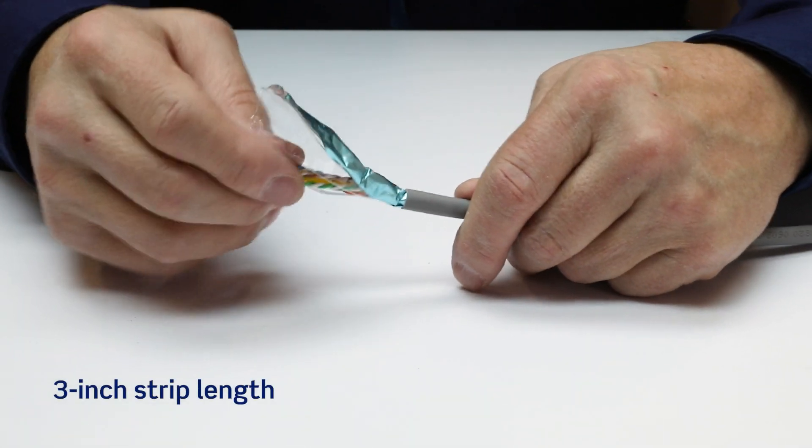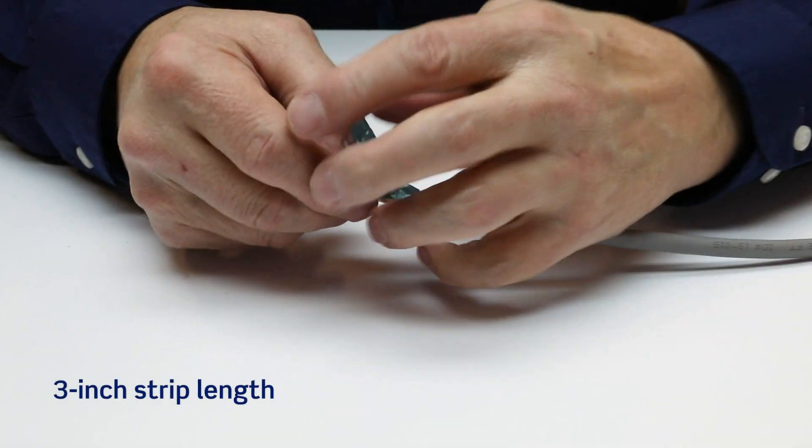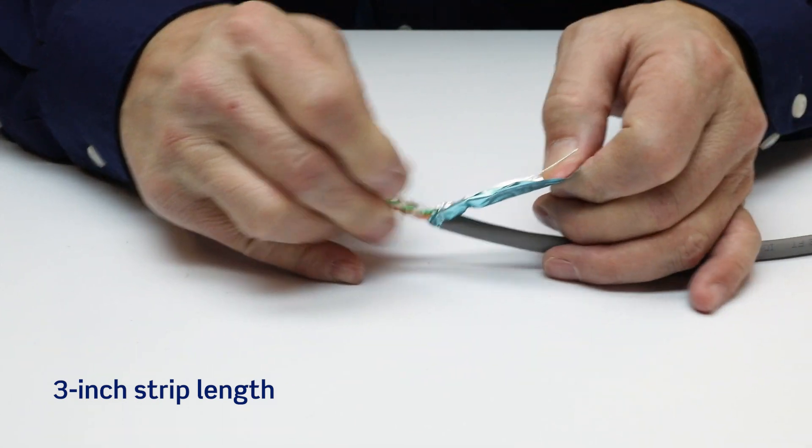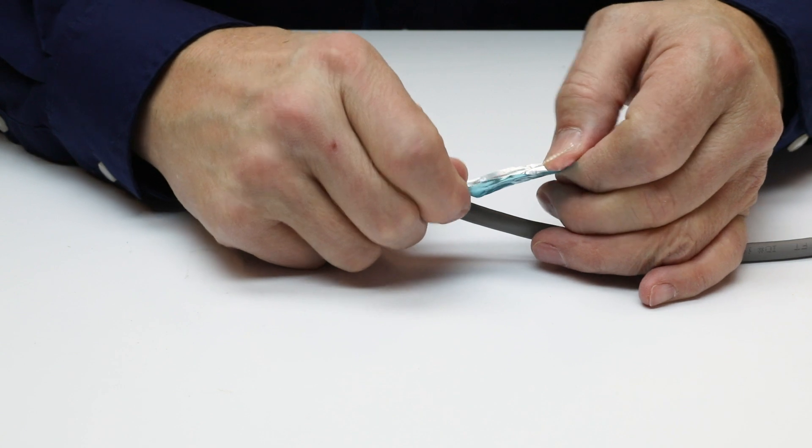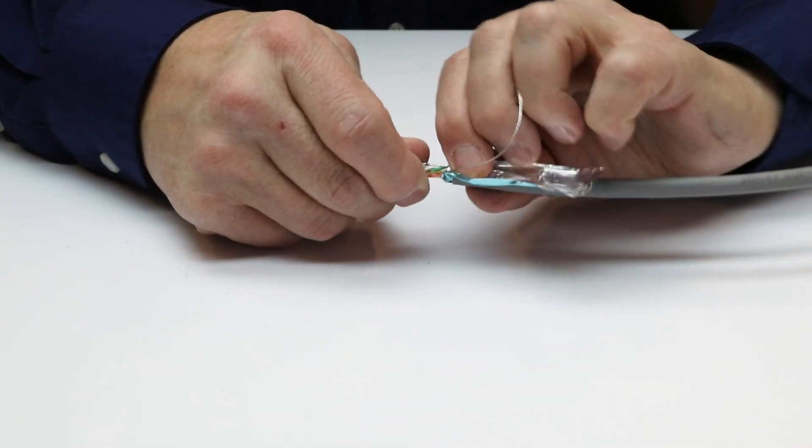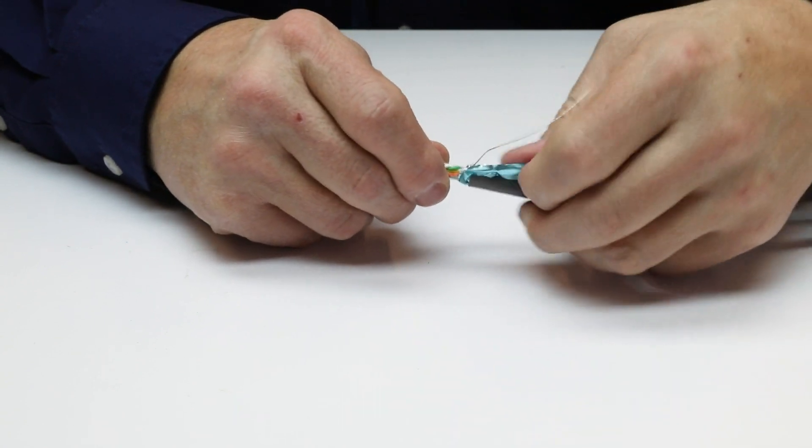A 3 inch strip length exposes sufficient length of drain wire for proper shield termination. Pull back foil and drain wire. The foil must be metal side out. Note that some shielded cable constructions may require a half twist when pulling the foil back.